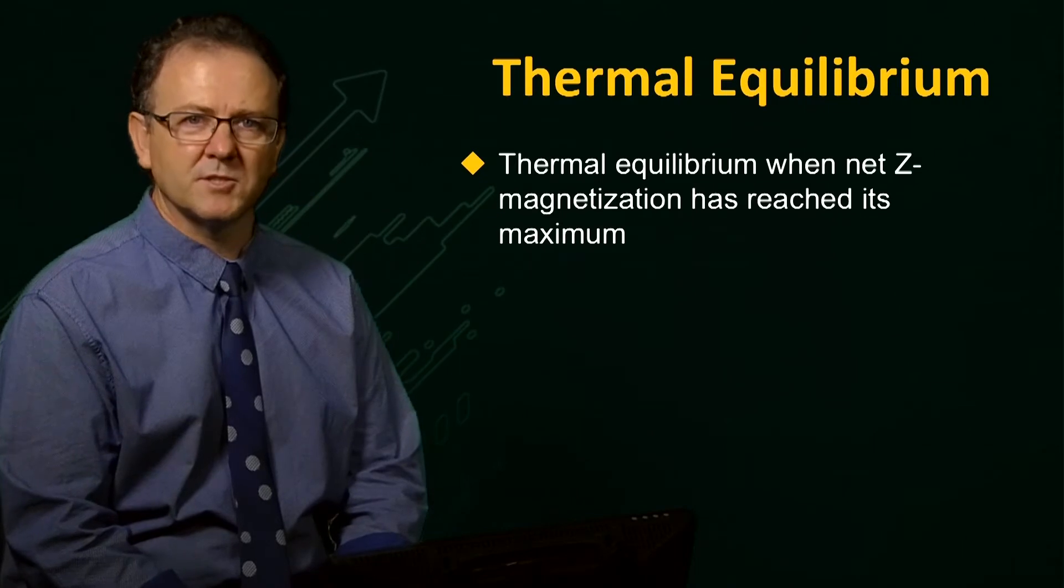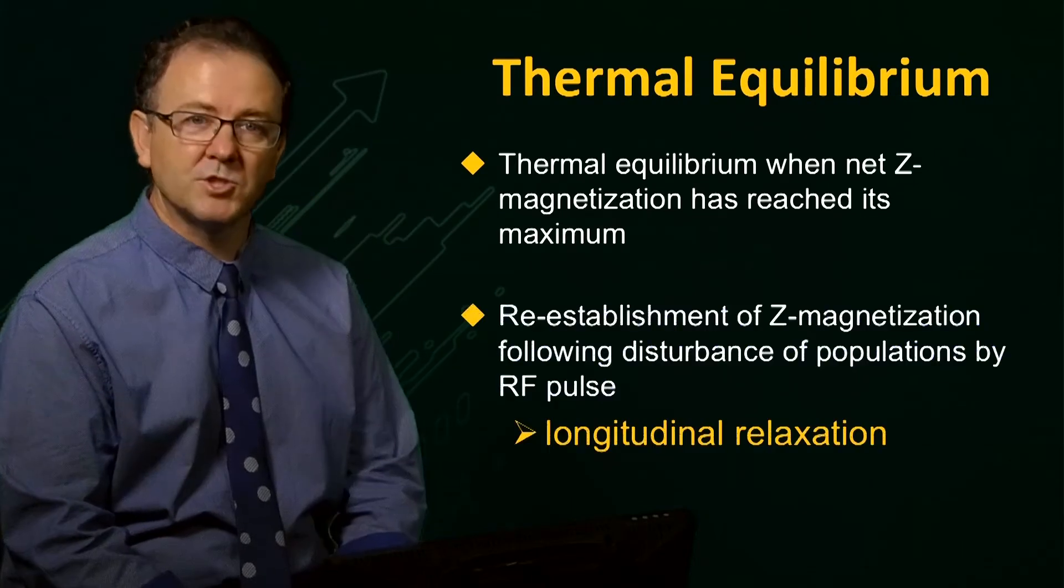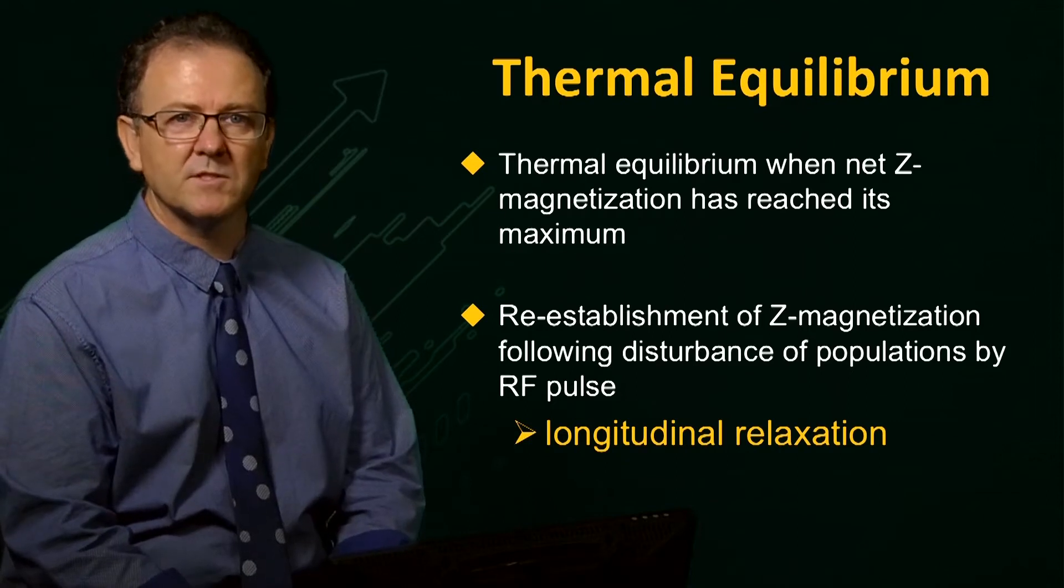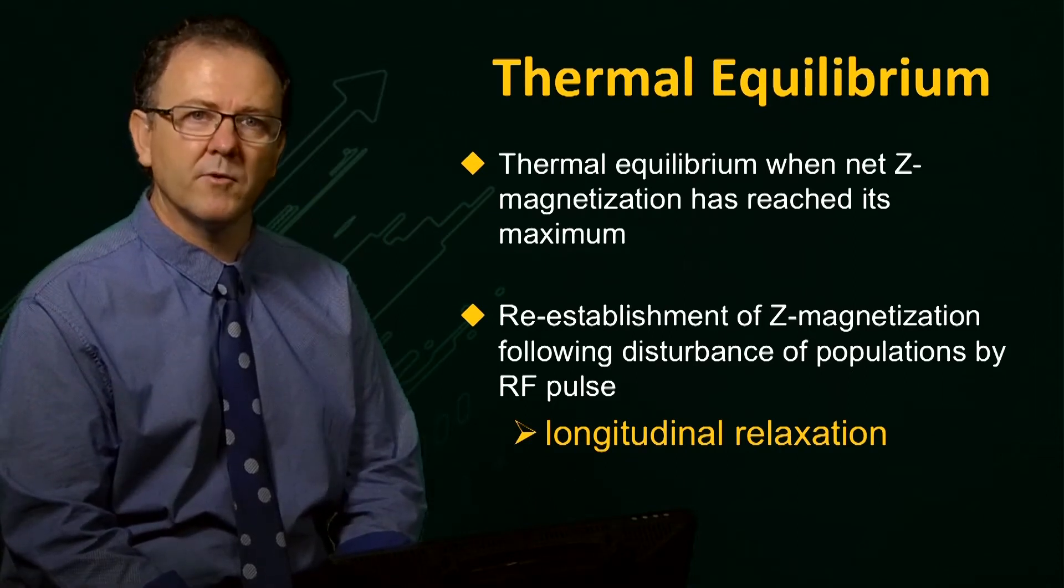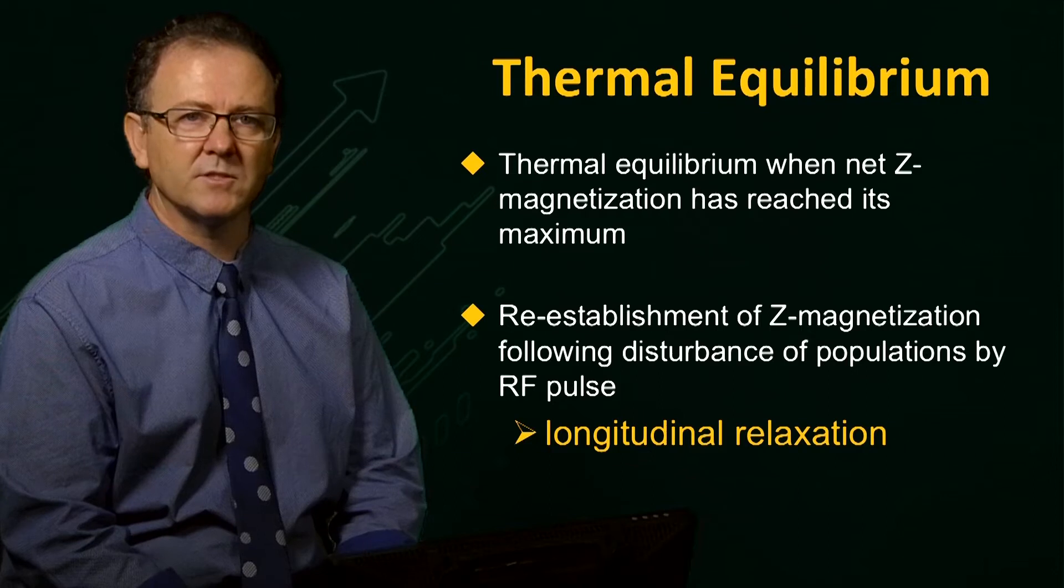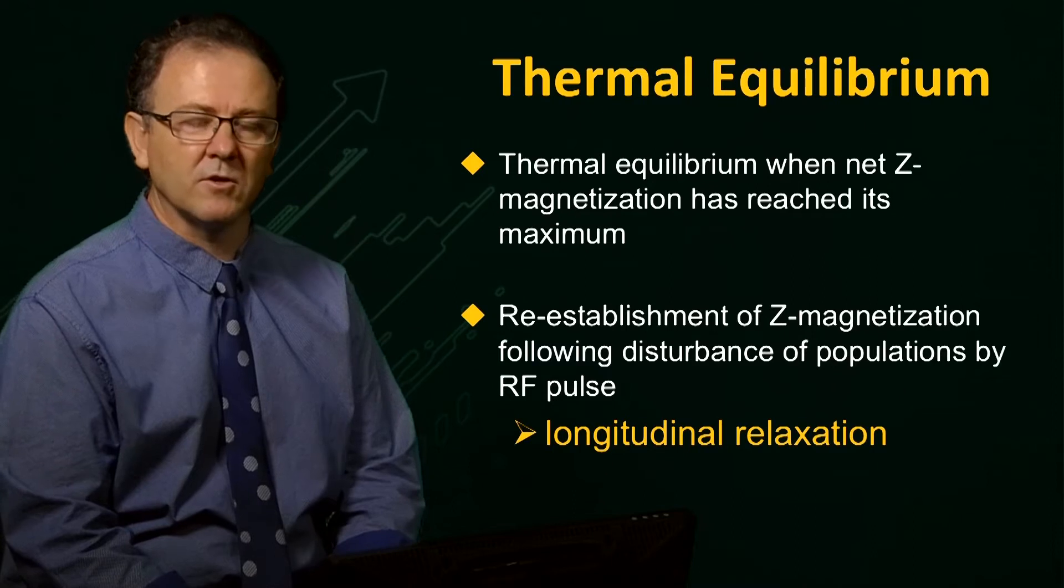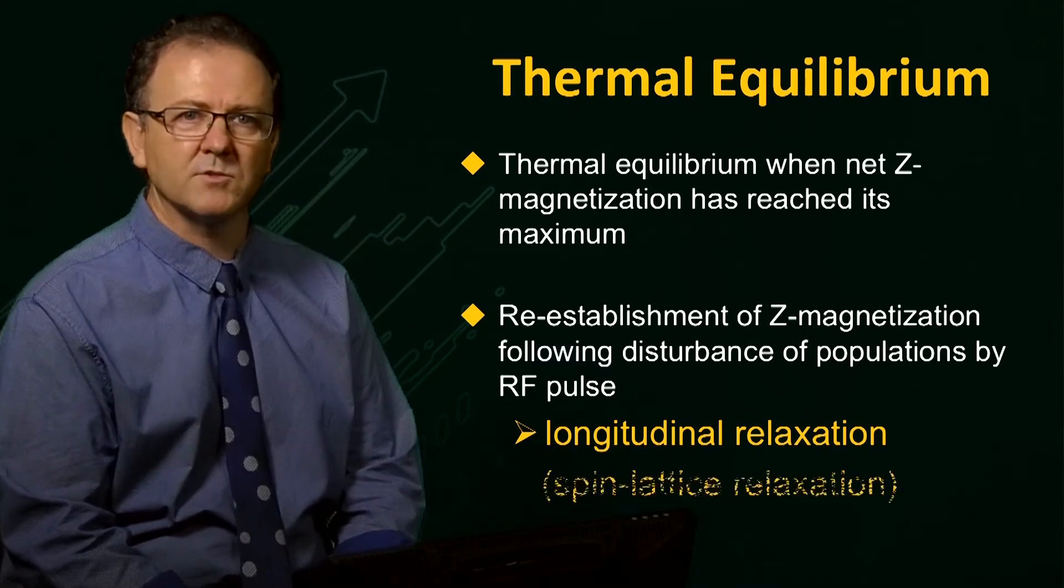Any disturbance of the system, such as applying an RF pulse which changes the spin population levels, or even a change in the field strength itself, will require a period of time to allow the magnetization to re-equilibrate. The process by which this occurs is known as longitudinal or spin lattice relaxation.